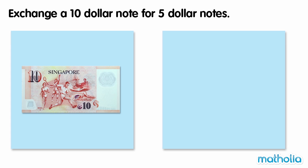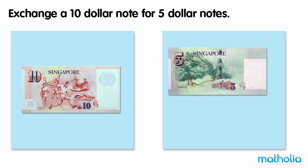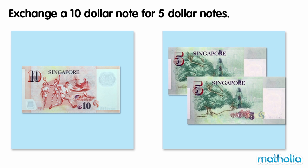Exchange a ten dollar note for five dollar notes. Ten is equal to five plus five, so ten dollars is equal to five dollars plus five dollars. We can exchange a ten dollar note for two five dollar notes.